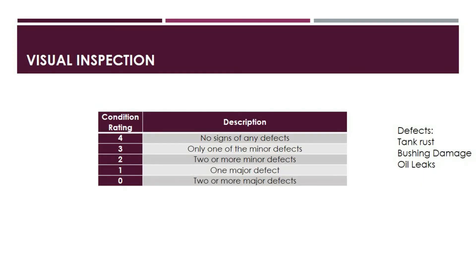The third category is the visual inspection. A rating of 4 means there is no rust on tank or enclosure, no damage to bushings, and no sign of oil leaks. A rating of 3 means minor occurrences of one defect, such as tank rust, bushing damage, or oil leaks. A rating of 2 means two or more defects are present but do not impact safe condition. A rating of 1 means the tank or radiator is badly rusted, there is major damage to bushings, or there is a major oil leak. A rating of 0 means two or more of these conditions are indicated as significant defects.